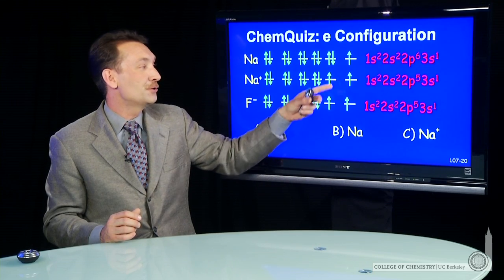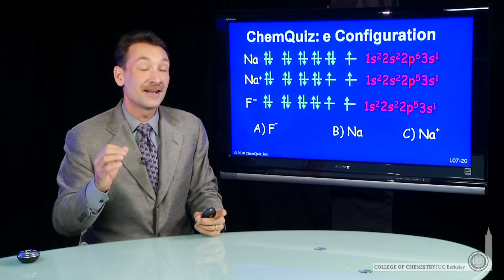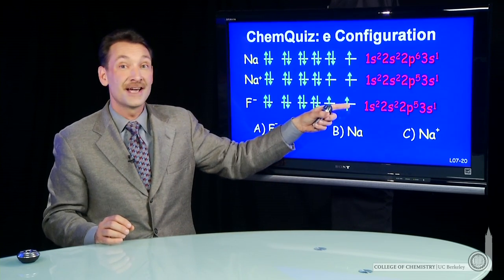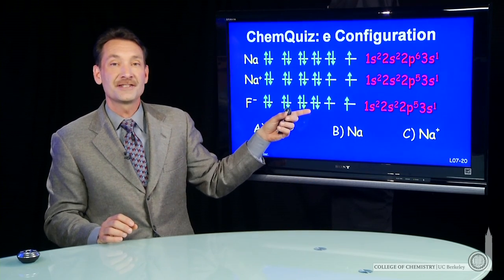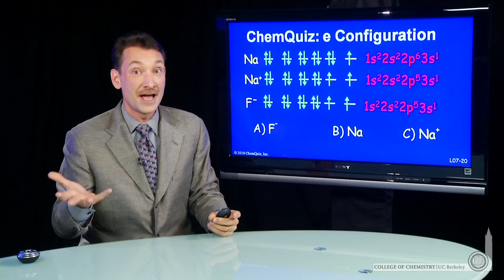So what we have are two 10-electron species. Every 10-electron species that's slightly excited, that is, has a 3s1 electron, will have this electronic configuration. Electronic configurations are not unique.